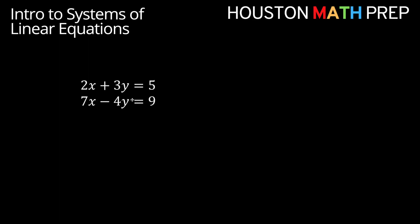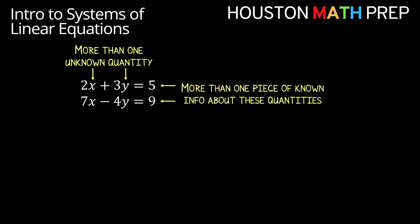Notice there aren't any exponents, roots, trig functions, logarithms, or terms with multiple variables. In our system you'll notice that we have information about more than one variable or unknown thing, and a system of linear equations simply means that we're considering more than one of this type of equation together at the same time.